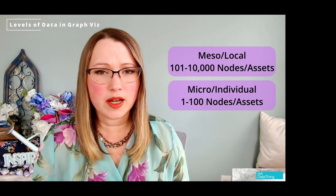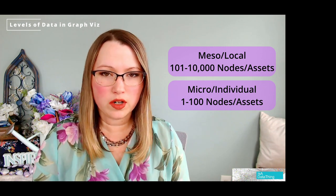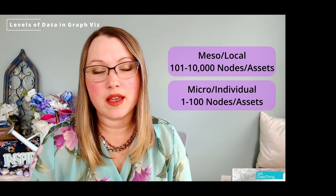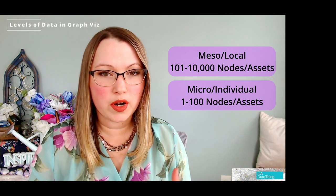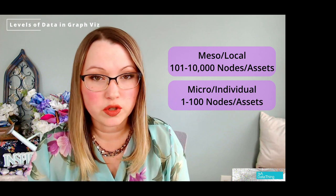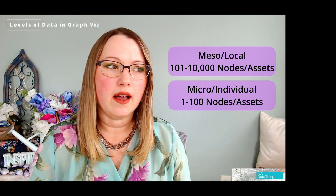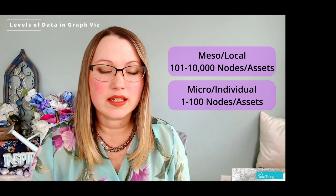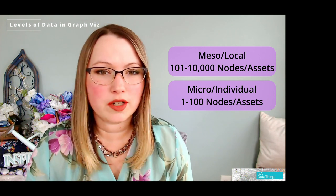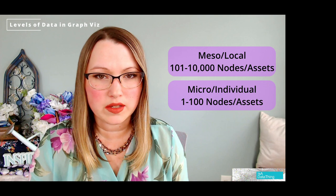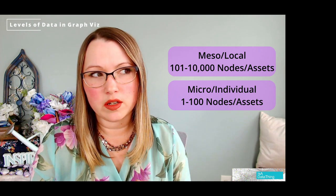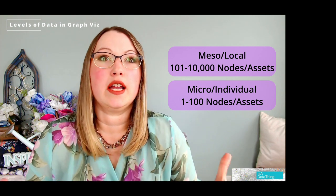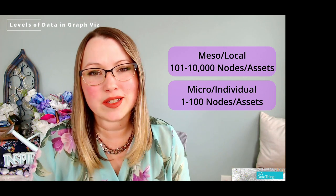The scope we're talking about here is situational. If your knowledge graph is focused on just your company or your products, then these levels might be: the individual asset you ship to a customer, the local collection or category of a certain asset, and the global being the large departmental category that product rolls up into. You're looking at this from a scale unique to your use case — not comparing it to the entire globe or universe.